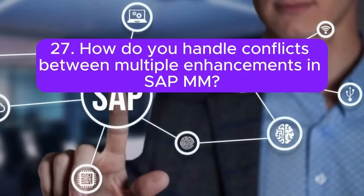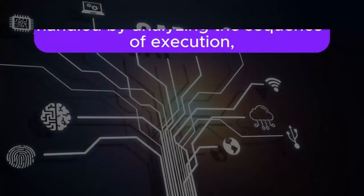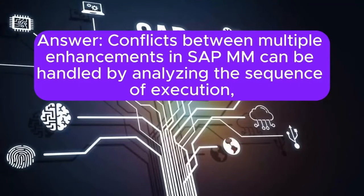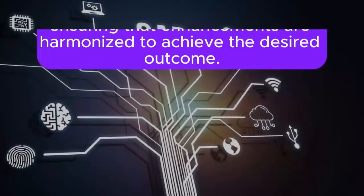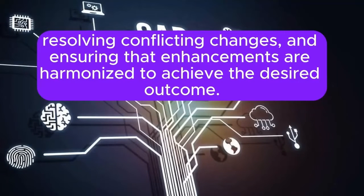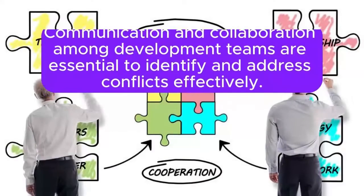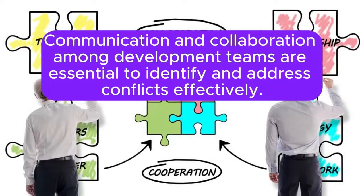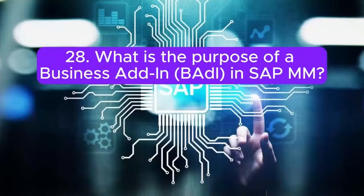How do you handle conflicts between multiple enhancements in SAP MM? Conflicts between multiple enhancements can be handled by analyzing the sequence of execution, resolving conflicting changes, and ensuring that enhancements are harmonized to achieve the desired outcome. Communication and collaboration among development teams are essential to identify and address conflicts effectively.